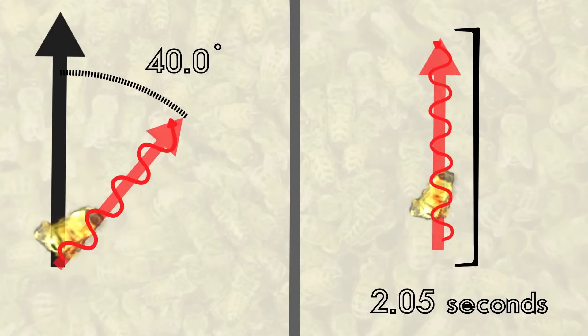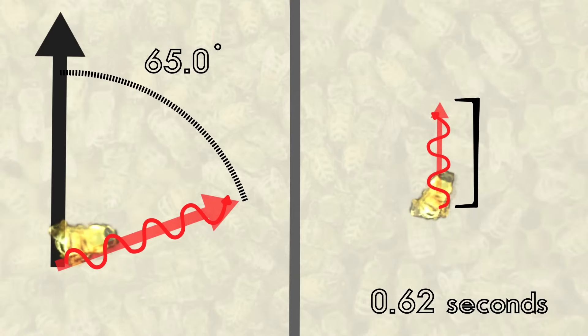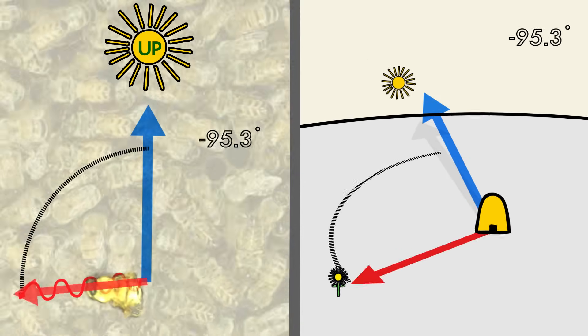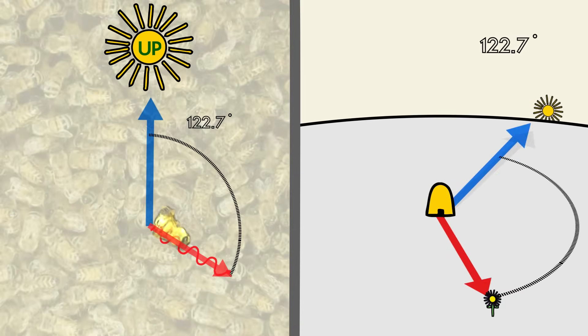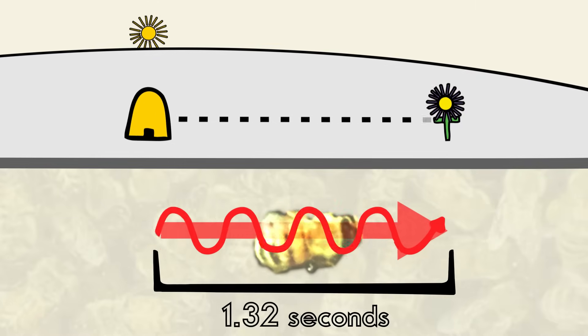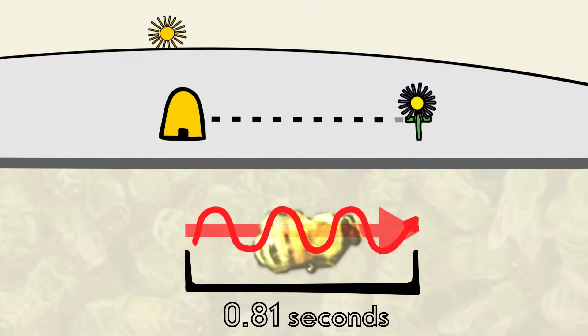Again, the information contained in a honeybee's dance consists of two parts. One, the orientation of the dance which describes what angle to travel away from the sun. And two, the duration of the middle part of the dance which expresses the distance of a food source away from the hive.